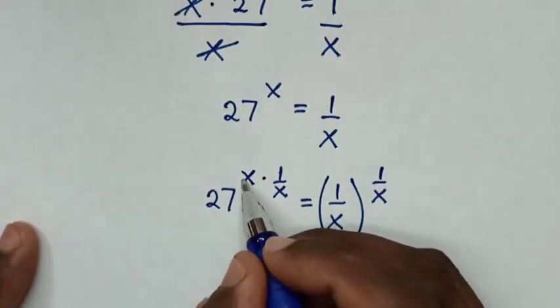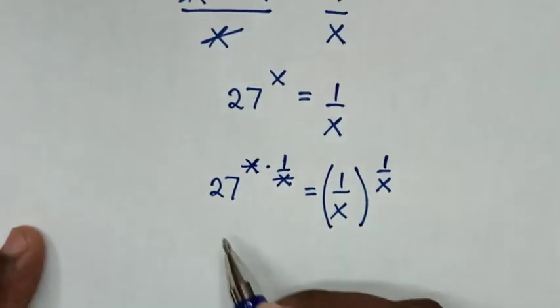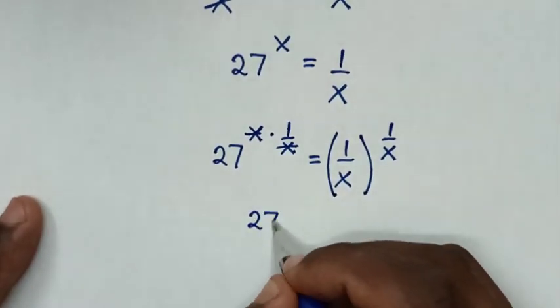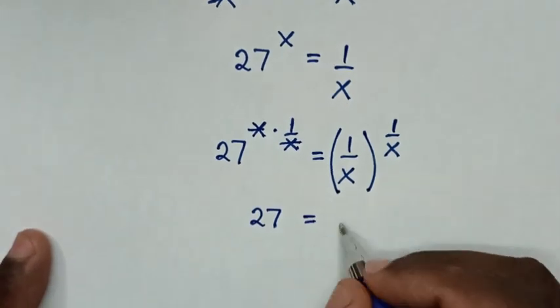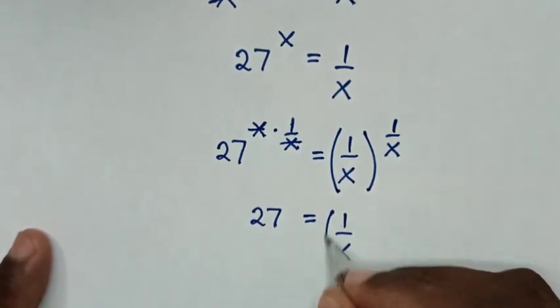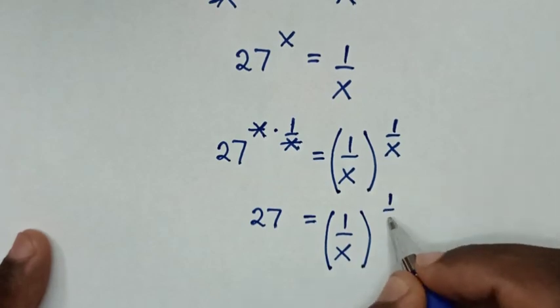In the next step, this x will cancel with this x. So it will be 27 to the power of 1, which is the same as 27, equals 1 over x in brackets to the power of 1 over x.